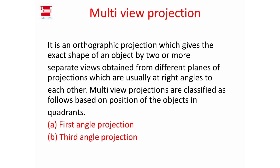That gives two separate views from different planes of projection — planes which are at right angles to each other. This multi-view projection includes first angle projection and third angle projection. The planes are mutually perpendicular to each other at 90 degrees, giving different views so we have the exact shape of an object. Orthographic projection preserves the original shape across perpendicular planes.